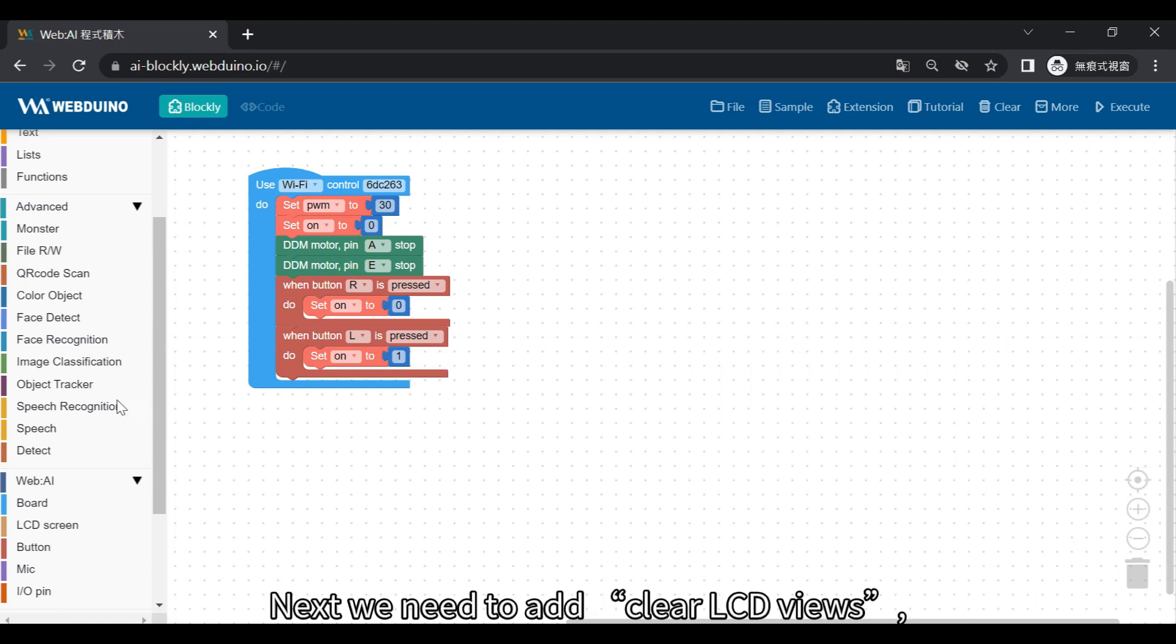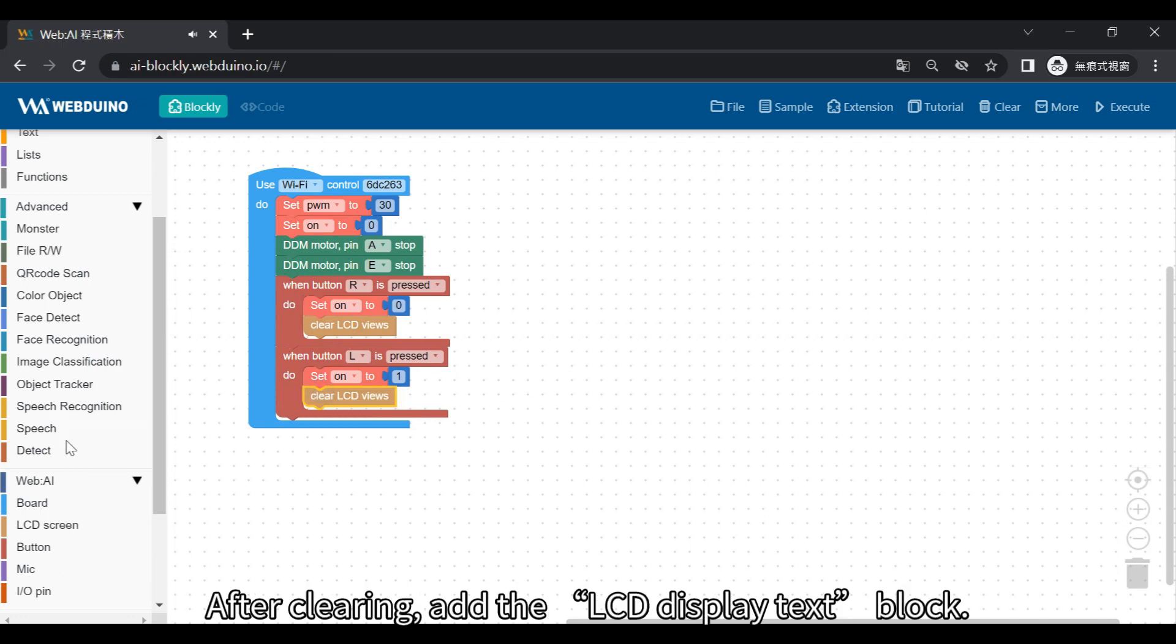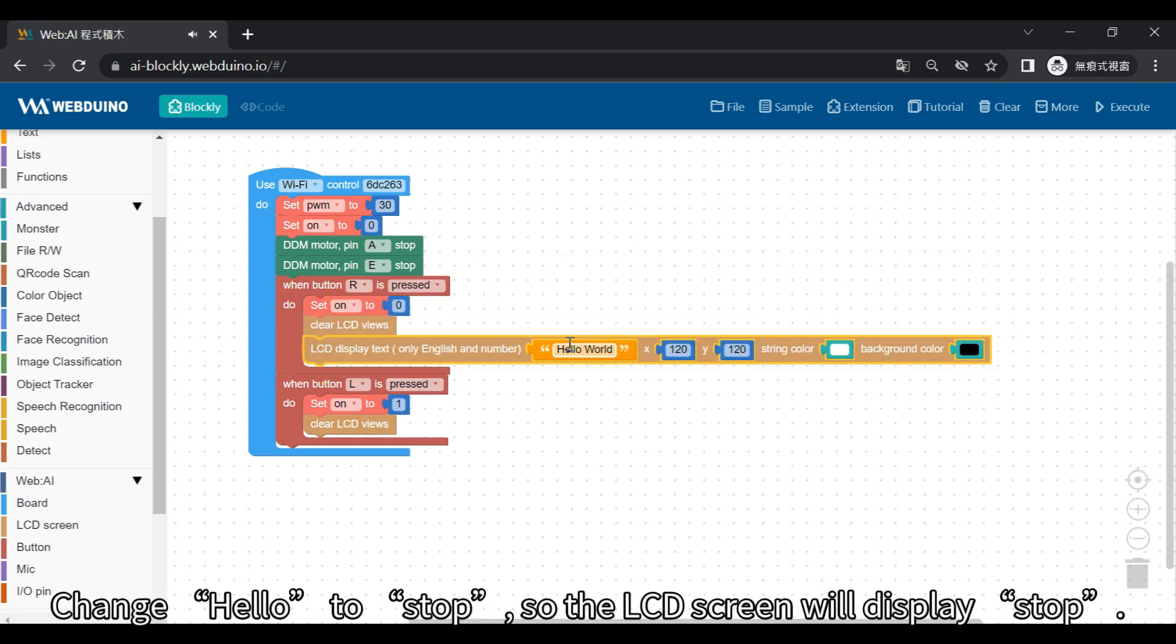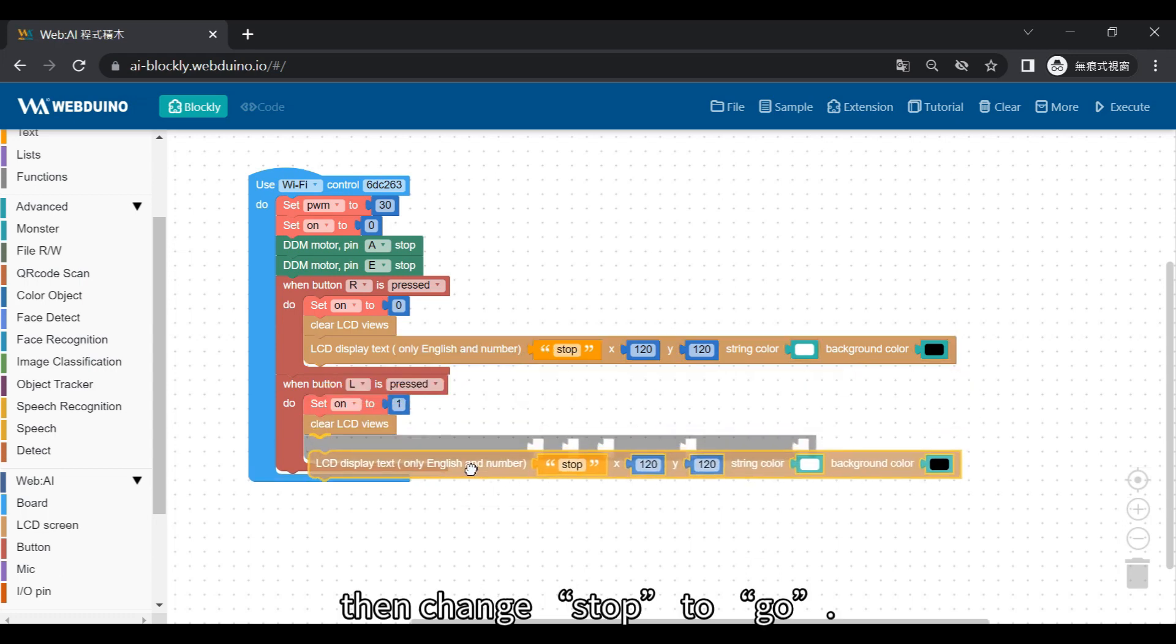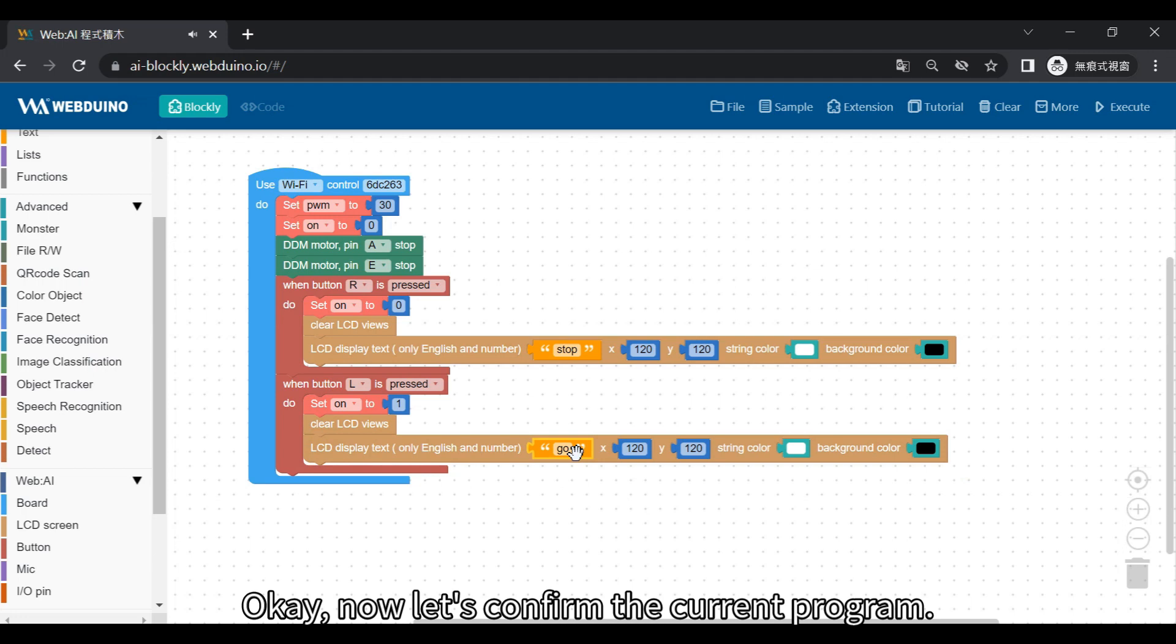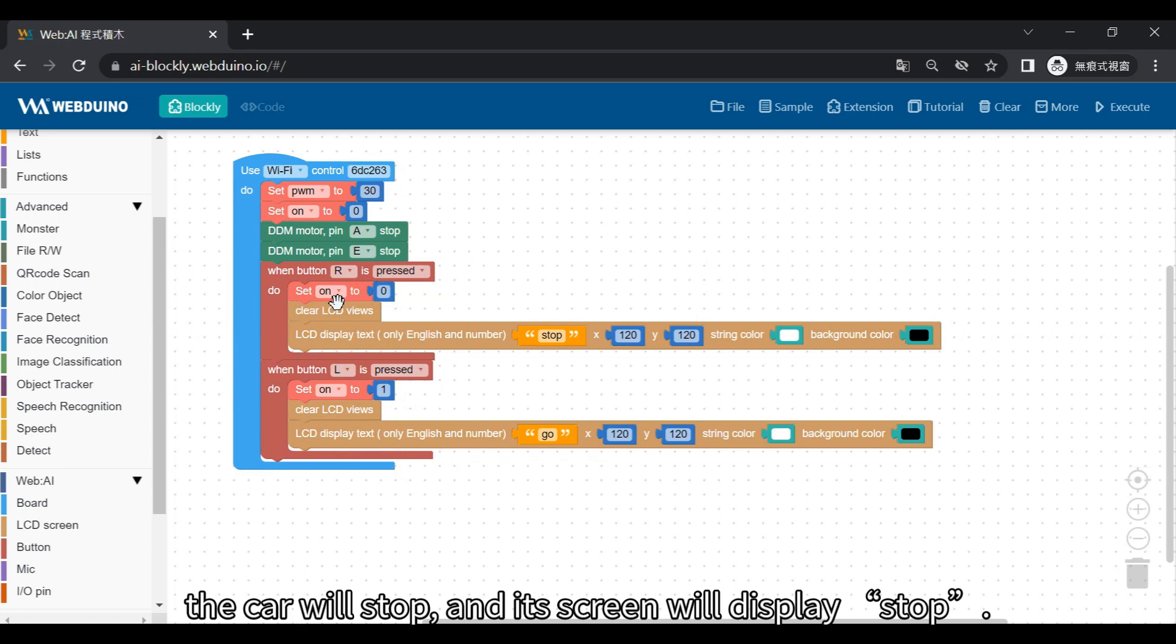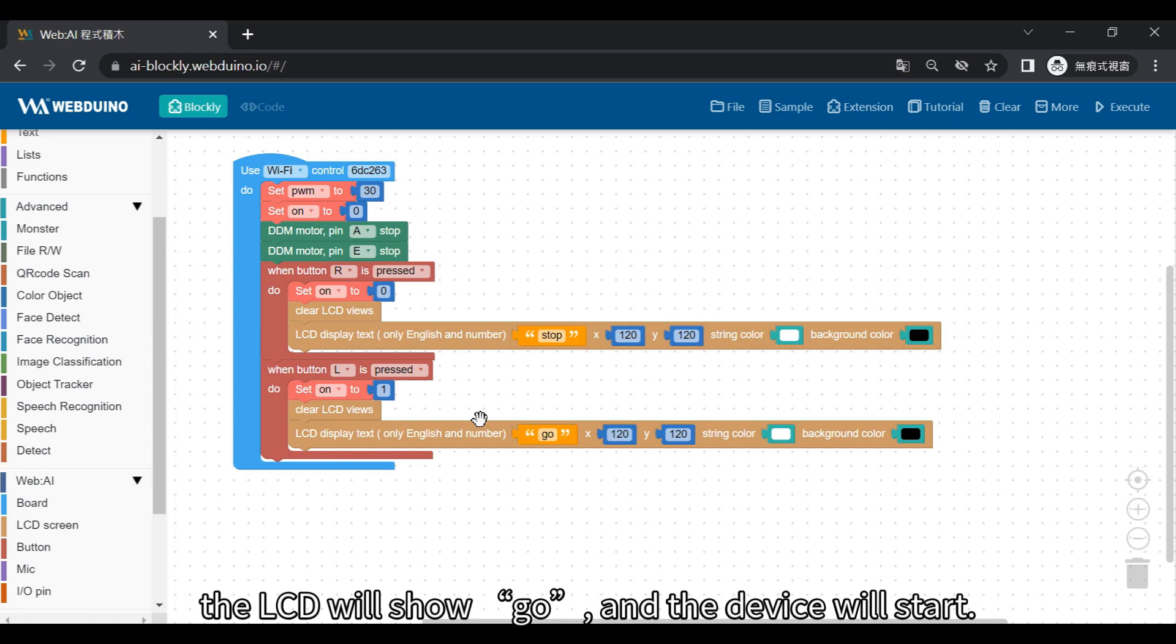Next, we need to add clear LCD views to make everything blank to begin. After clearing, add the LCD display text block. Change hello to stop, so the LCD screen will display stop. Copy the block, then change stop to go. OK, now let's confirm the current program. If the R button is pressed, the car will stop, and its screen will display stop. When L is pressed, the variable becomes 1. The LCD will show go, and the device will start.